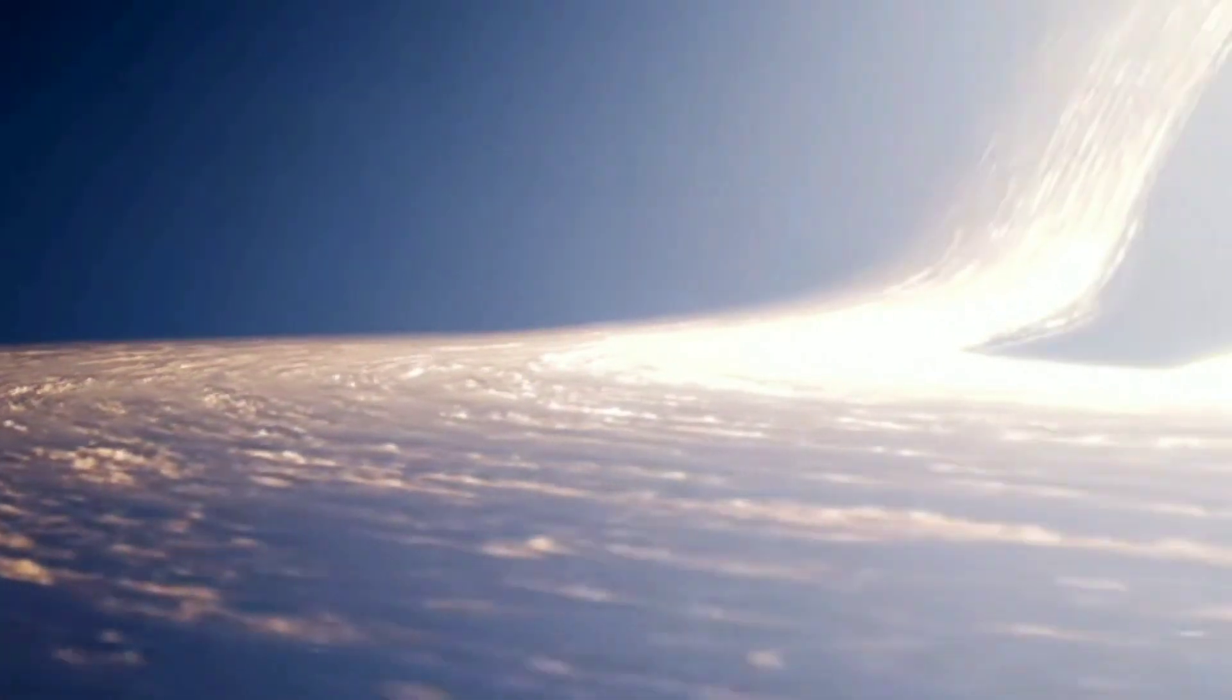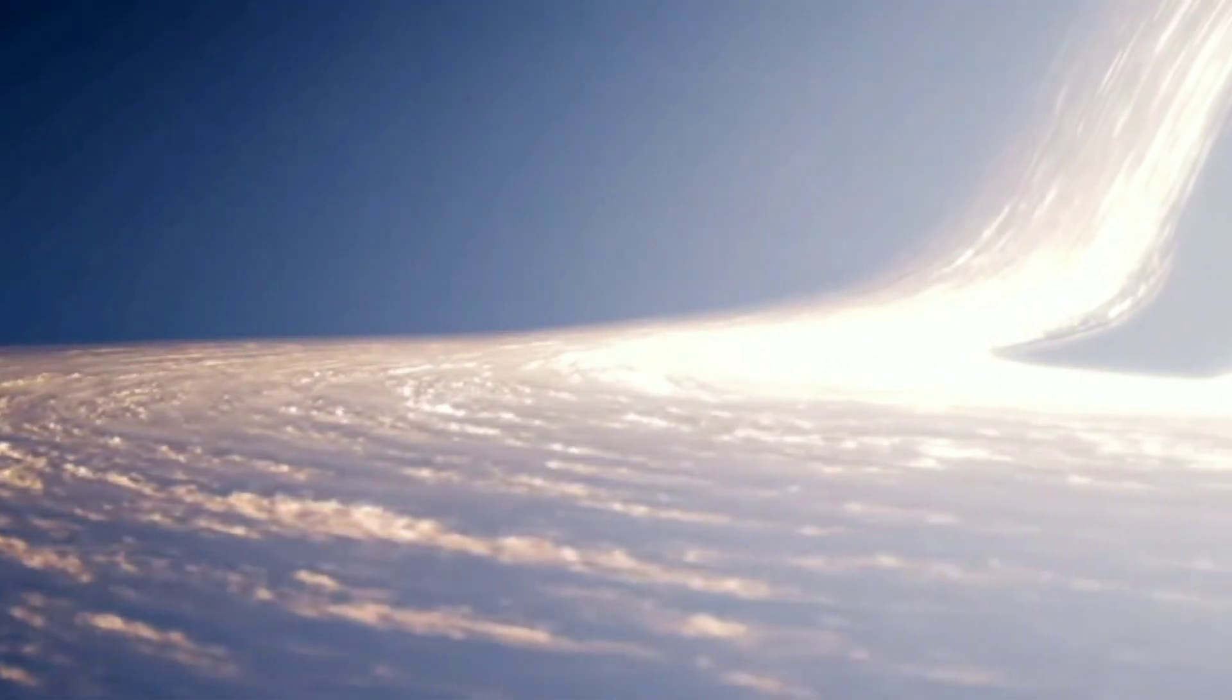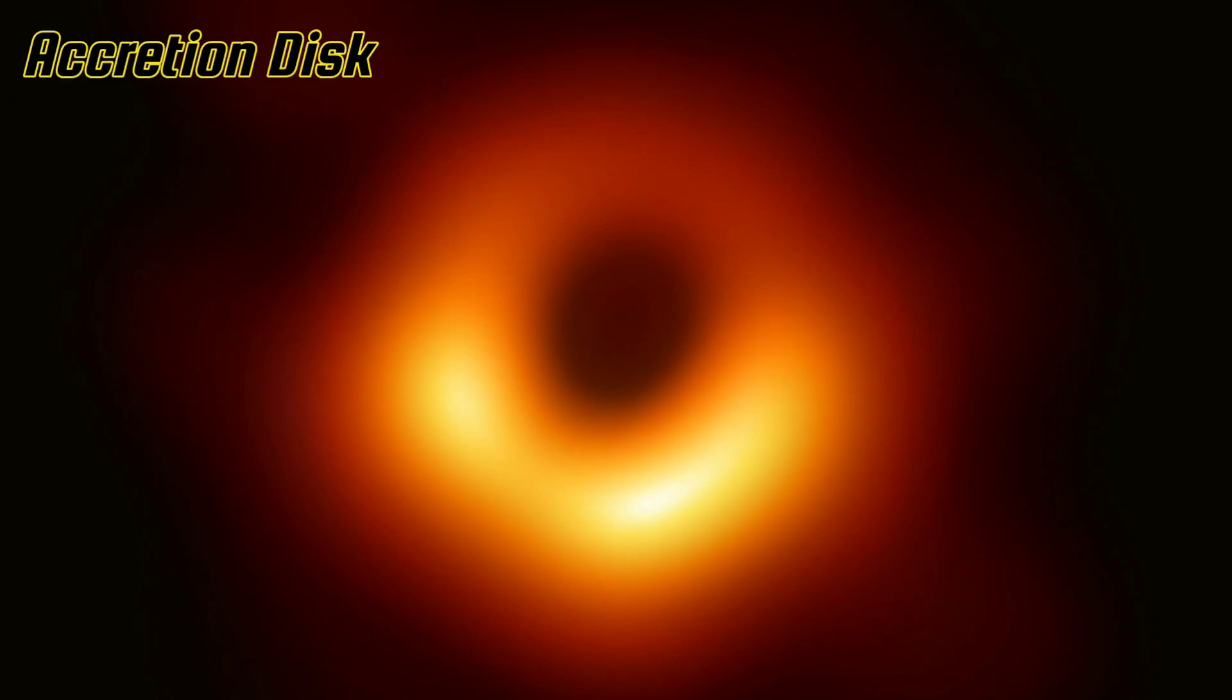This light is caused due to the friction of particles around the event horizon of this black hole. It is called the accretion disk of a black hole. This disk is bigger than our solar system.